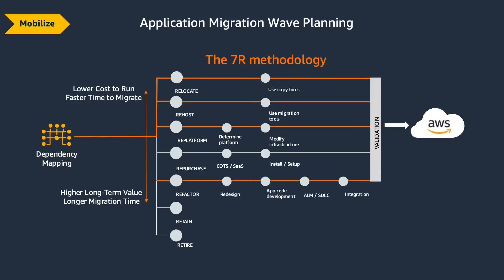The other Rs are: Repurchasing — if there's a SaaS offering available, leverage that. Refactoring — redesigning the entire application. Retain — if you don't want to do anything with an application, just keep it. And Retire — identifying applications no longer needed or already replaced, to sunset them. Those are the different paths an application could take.